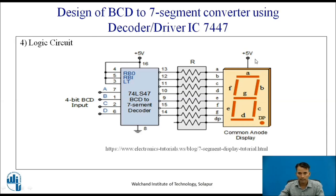As it is a common anode, all the anodes are connected to plus VCC or plus 5 volt. Let us design this BCD to 7-segment converter in a simulator, so we can observe how a BCD to 7-segment converter works.